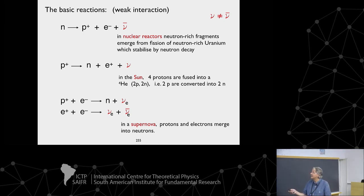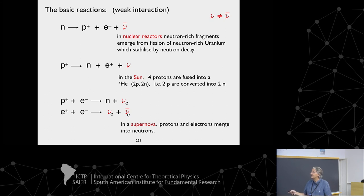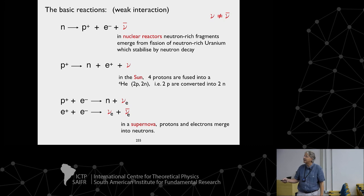This is important in a supernova because the dense core is so dense that nothing gets through apart from neutrinos. So in the collapse phase, 99% of the gravitational energy is converted into neutrino-antineutrino pairs, which then escape. This is like a steam valve in a pressure kettle — neutrinos are the valve that lets the energy out.